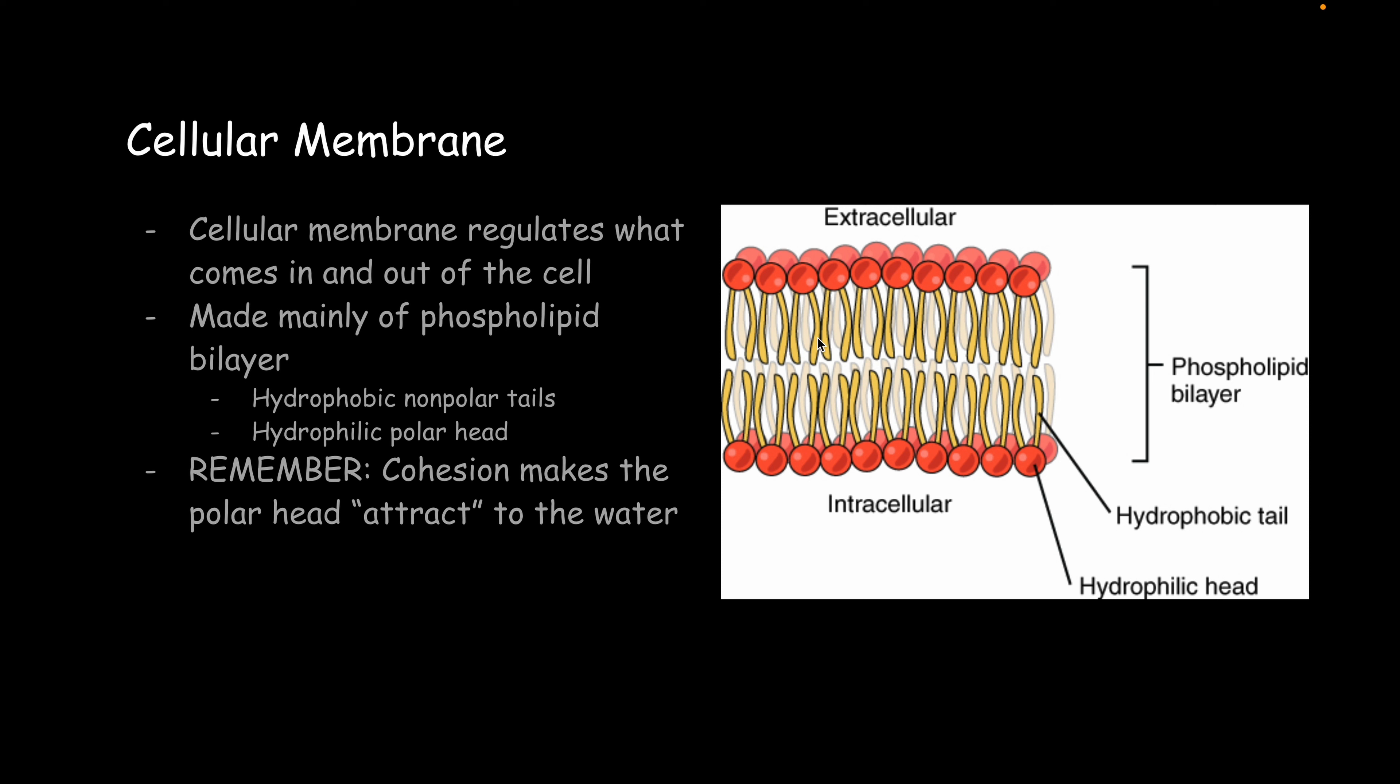So cohesion is what's going to make those polar heads attract to the water, so that's why they get that little fluid-like shape, that uniform shape where it's facing down and facing up. It's going to be facing the water.